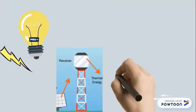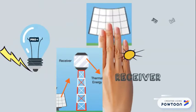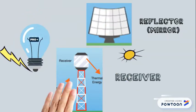All solar thermal power systems have solar energy collectors with two main components: reflectors that capture and focus sunlight onto a receiver.